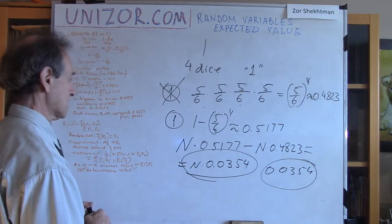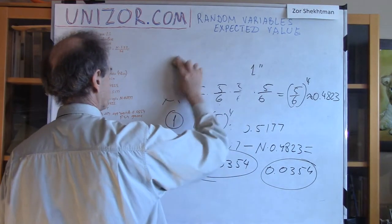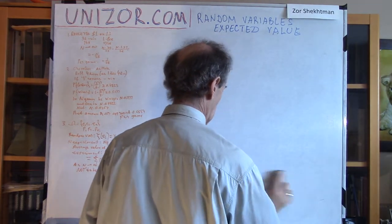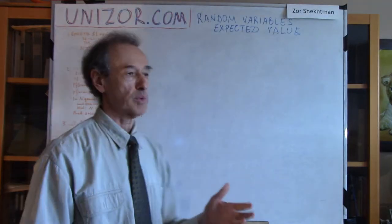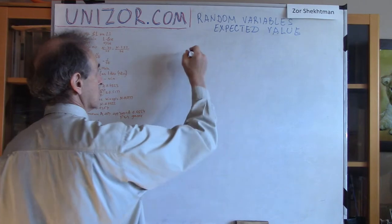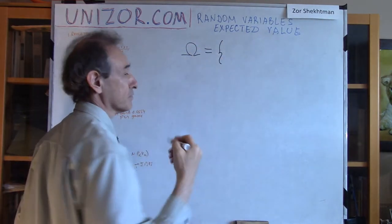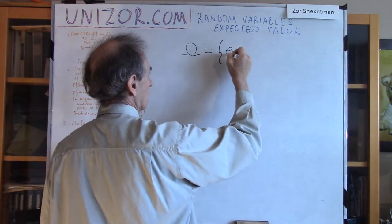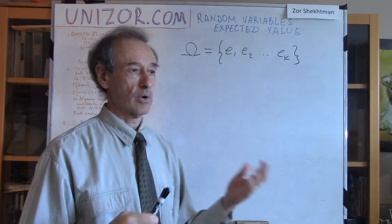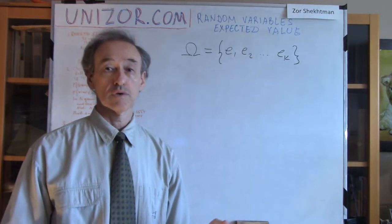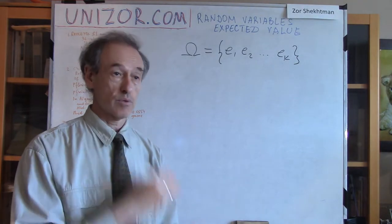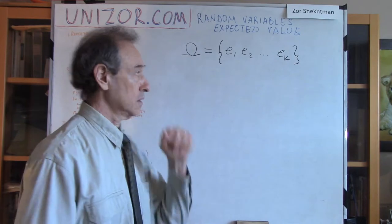That's it for examples — now let's go to pure theory. The pure theory follows exactly the same way as explained in the examples. First, we describe our random events. Let's call it omega — a combination of certain elementary events. We might have, say, k different elementary events. In case of roulette we have 38 different results; in case of Cavalier de Méré, we have only two — there is a one, or there is no one among the four dice.